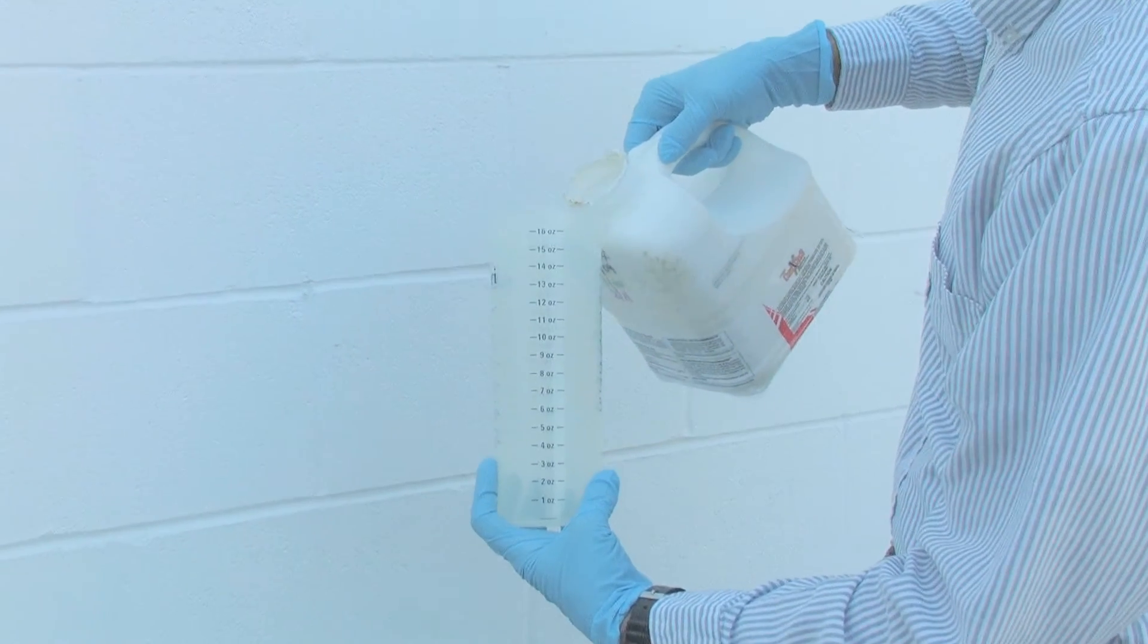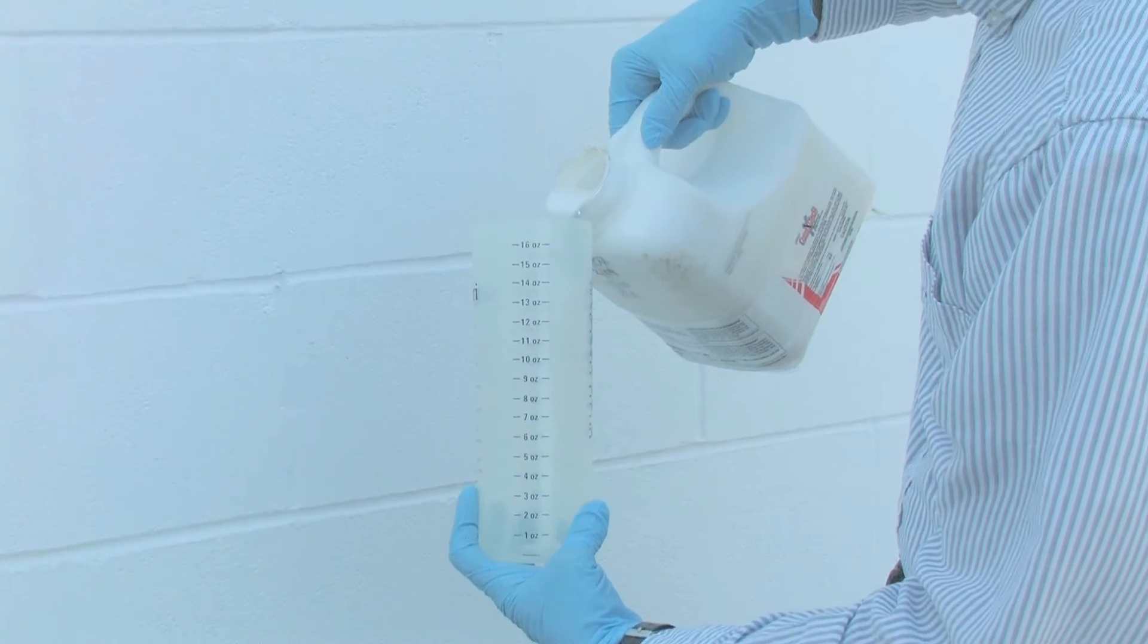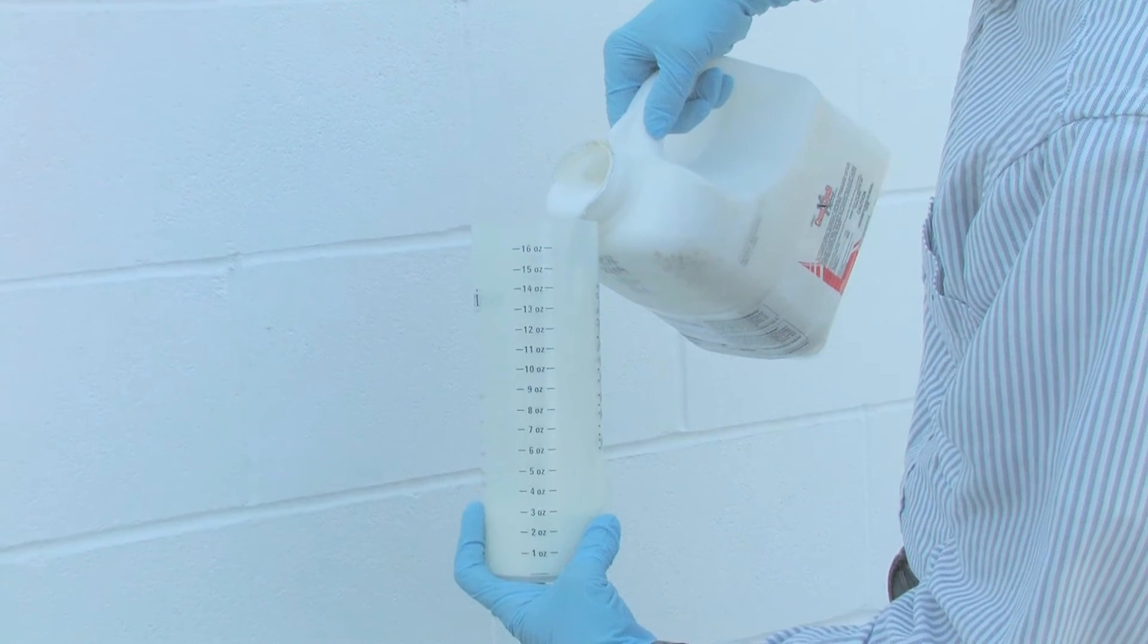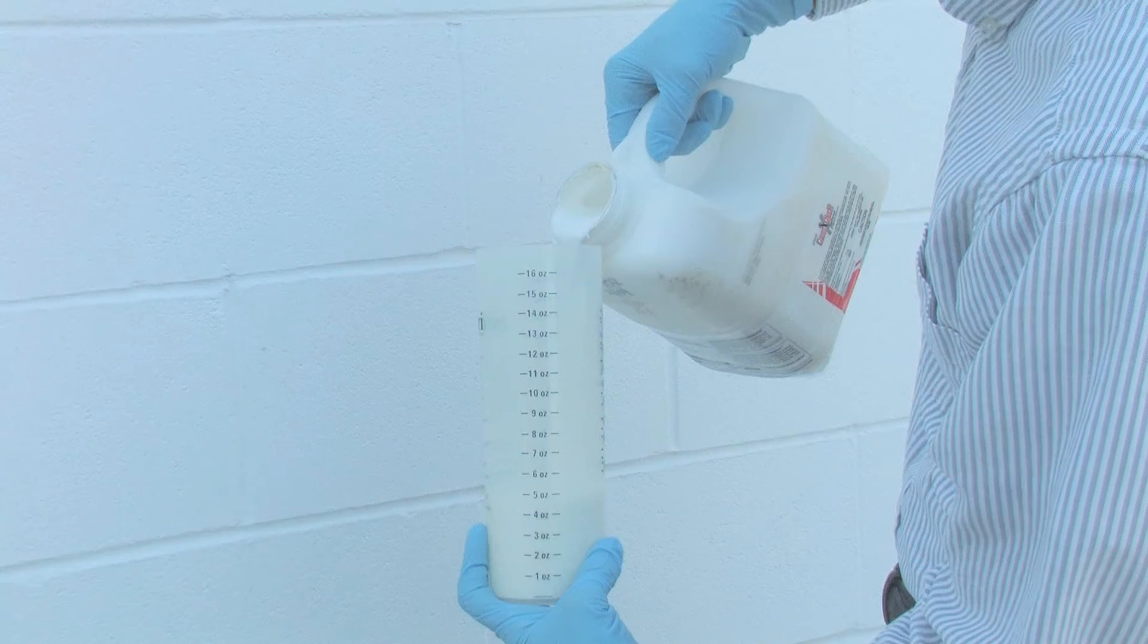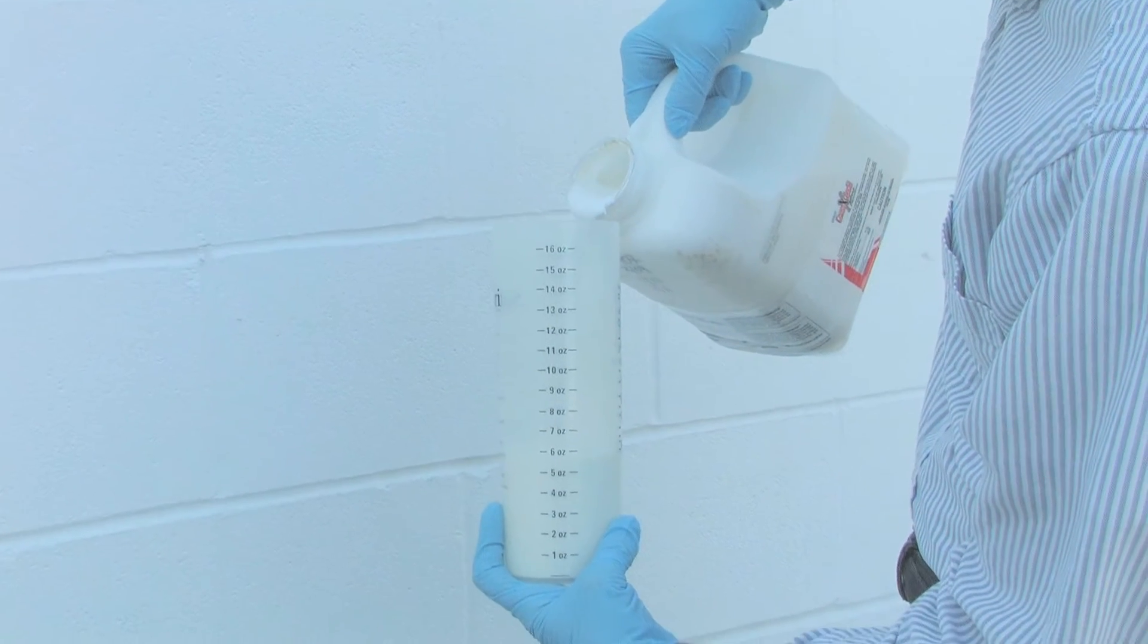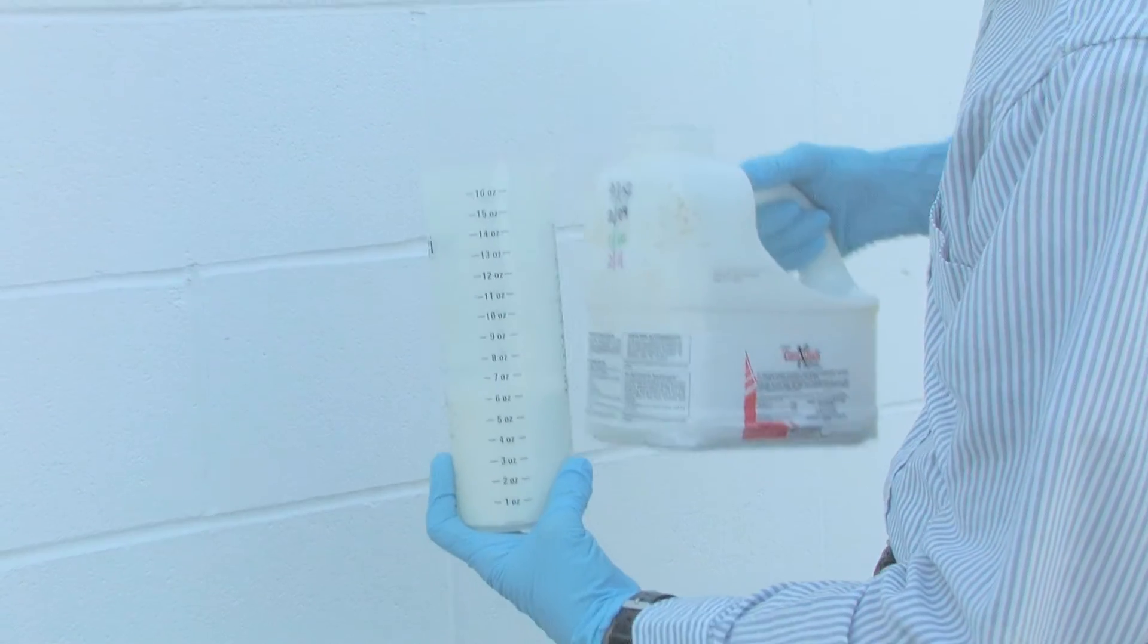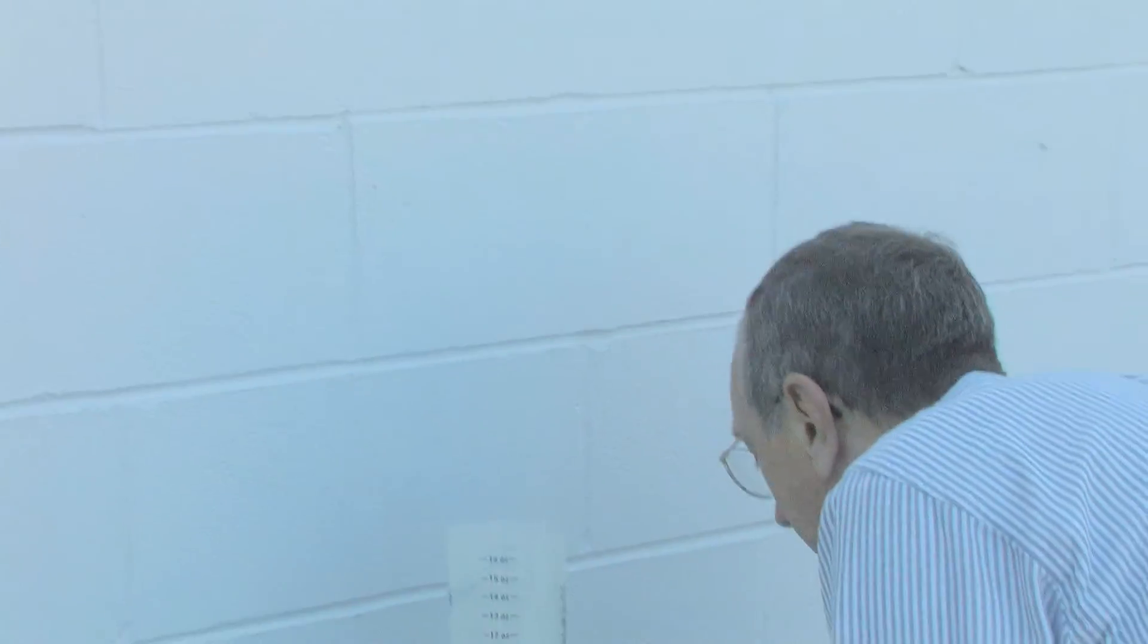The third way is to use a measuring cup and fill it up to the correct amount. You never want to guess the amount of product you're going to use. Use one of the three methods to measure pesticide and get the correct amount into the sprayer.